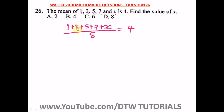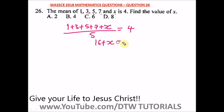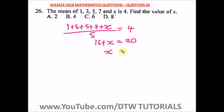Let's add up the numbers: 1 plus 3 is 4, plus 5 is 9, and 9 plus 7 gives us 16. So we have 16 plus x. Cross multiplying, 5 times 4 gives us 20. So x equals 20 minus 16, which is 4. The value of x is 4, and the correct option is option B.